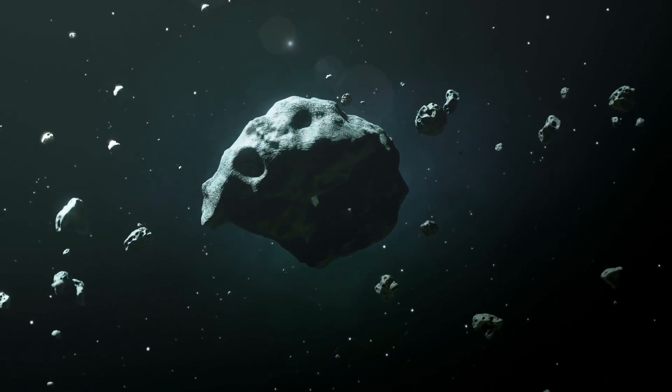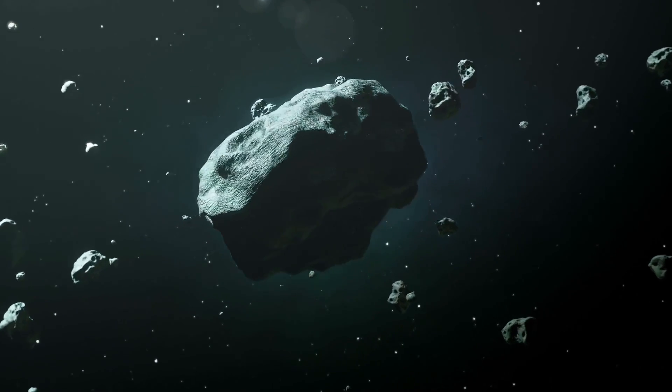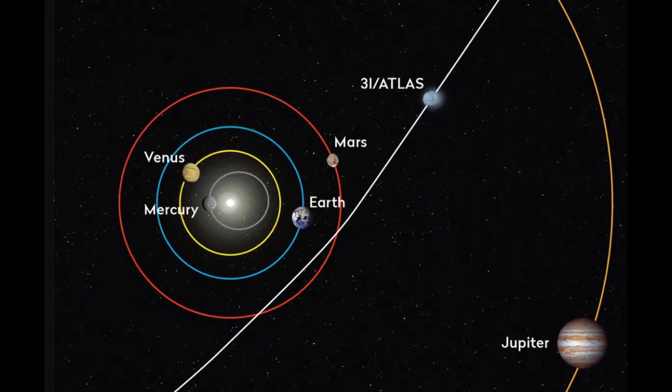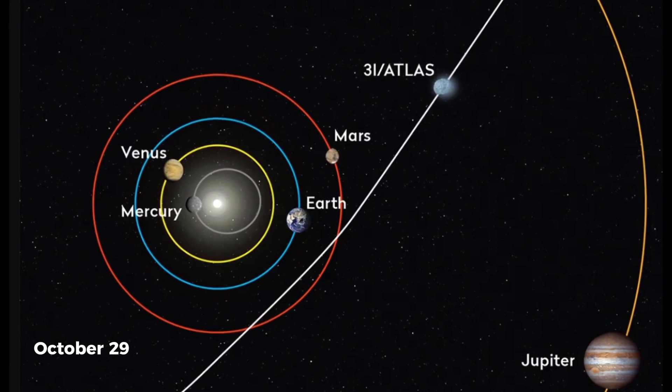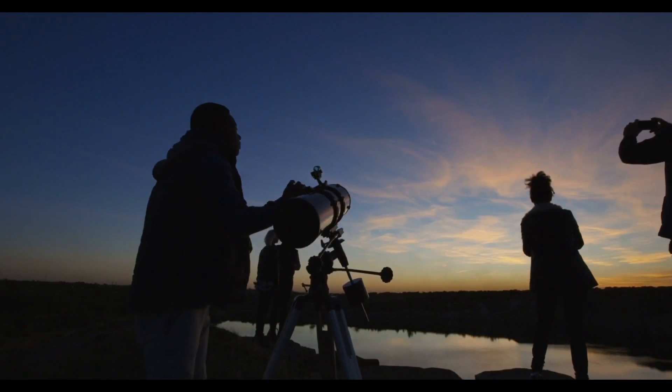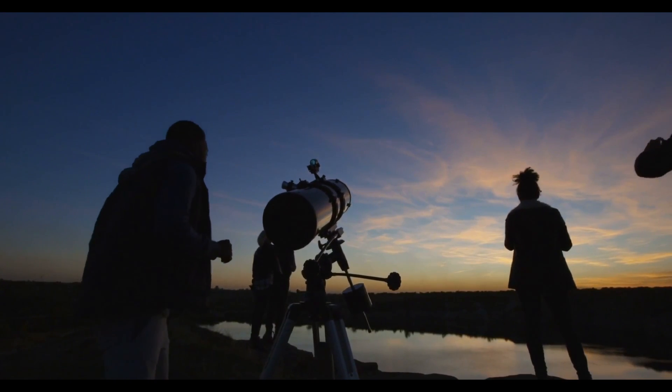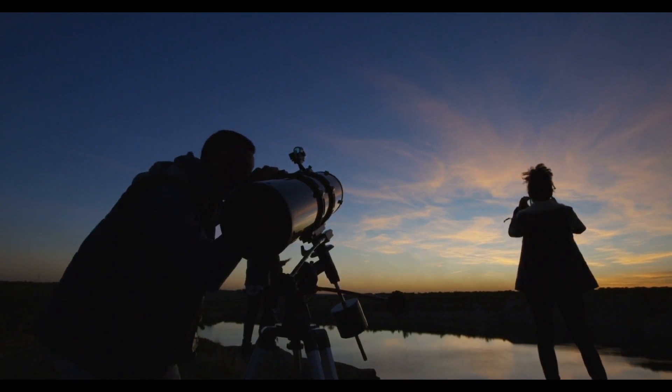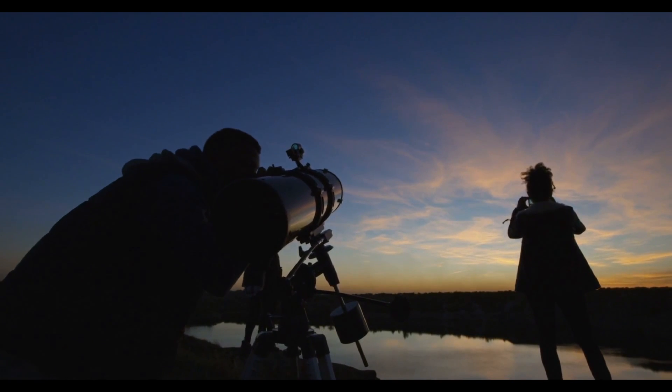This perfect alignment, known as superior conjunction, will occur on October 21st, followed just days later by its perihelion on October 29th. For now, we wait, cut off from direct observation, unable to see what changes may unfold as it hurtles into the Sun's intense electric and magnetic field.